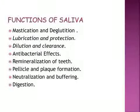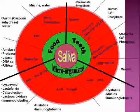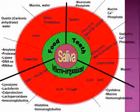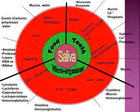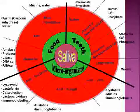In this chart the functions of various salivary constituents are shown. Bicarbonate and phosphate provide a buffering action, while mucins, calcium, and phosphate prevent demineralization of teeth. Statherin, calcium, and phosphate enhance remineralization, while mucins help in lubrication of the mucosa.